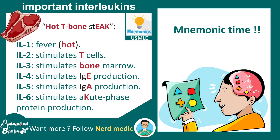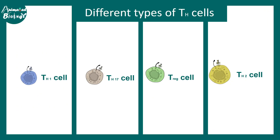A useful mnemonic for remembering interleukin functions is 'hot T bone steak': Hot stands for fever (IL-1), T stands for stimulating T cells (IL-2), Bone represents IL-3 triggering the bone marrow, IgE production is stimulated by IL-4, IgA production by IL-5, and IL-6 stimulates acute phase protein production.